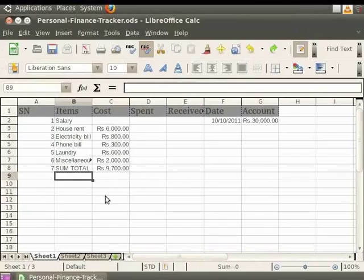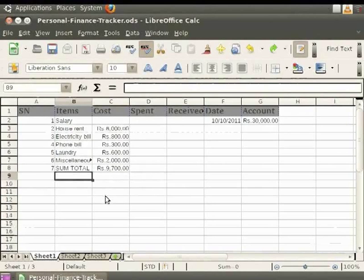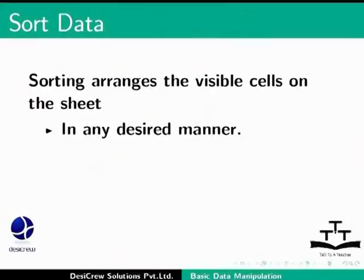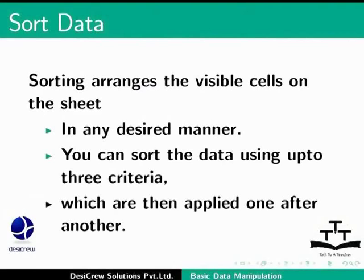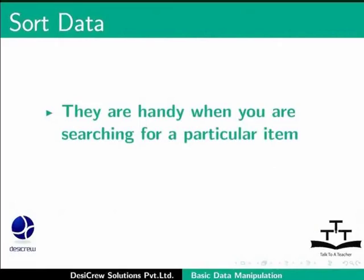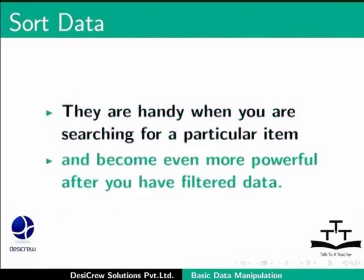Similarly, you can find the average of elements in a horizontal row. We will learn more about formulae and operators in advanced level tutorials. Let us now learn how to sort data in a Calc spreadsheet. Sorting arranges the visible cells on the sheet in any desired manner. In Calc, you can sort the data using up to three criteria, which are then applied one after another. They are handy when you are searching for a particular item and become even more powerful after you have filtered data.